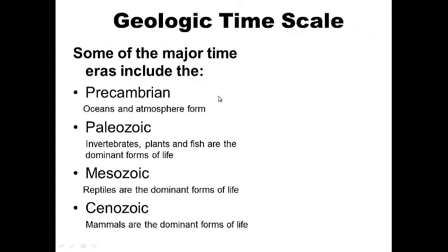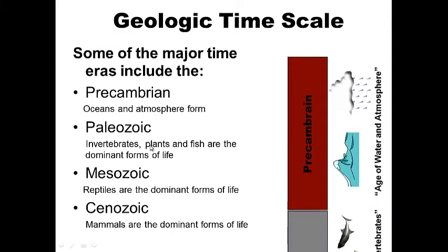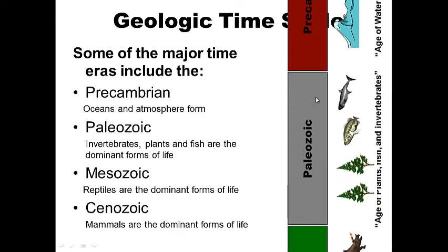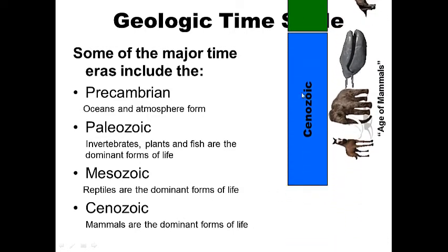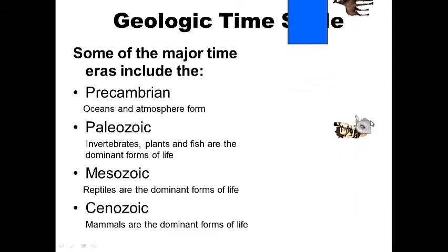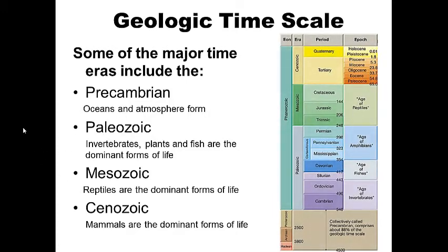Some of the major time areas include the Precambrian, where our oceans and atmospheres formed. Then we have the Paleozoic, where invertebrates, shells, plants, and fish dominate. Then we have the Mesozoic — pretty much the age of reptiles. And then finally, we have the Cenozoic, or the age of mammals. The Precambrian dominated most of Earth's time, with the formation of our oceans and atmospheres. The Paleozoic features invertebrates, plants, and fish as the dominant forms of life. The Mesozoic features reptiles, and the Cenozoic features mammals as dominant life, finishing off with mankind.